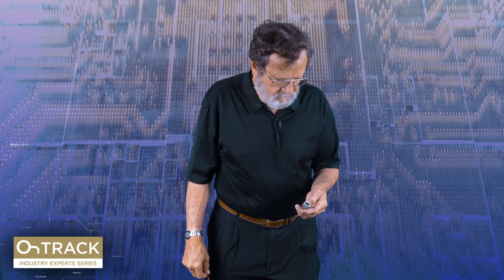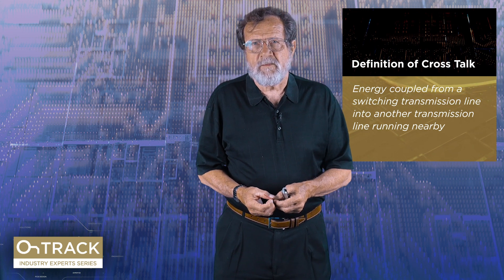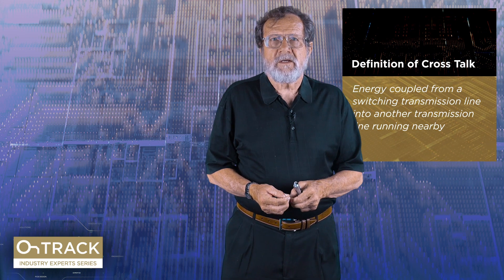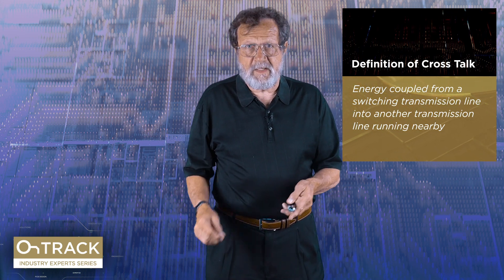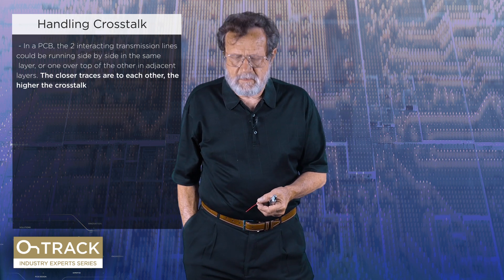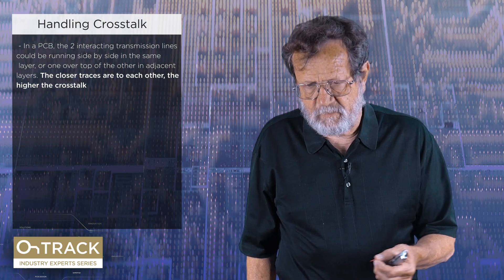The second thing we're going to run into as we go up the speed curve is crosstalk. This is energy that is coupling from a switching transmission line into a neighbor called a victim. We want to guarantee that we have a geometry that keeps that crosstalk under control. In boards the primary source of this is traces running side by side in the same layer, or one over the other in adjacent layers. Edge-to-edge spacing and height above the plane are the two variables we're going to control.